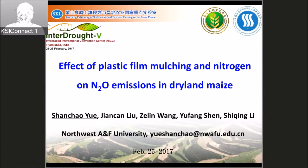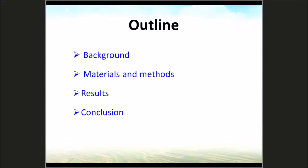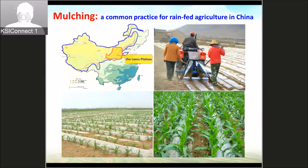This is included in four parts. In China, the arid area is about 17 percent and is mostly in the northwest. In recent years, plastic film mulching practice is becoming a common practice for farmers to increase yield in rain-fed agriculture. You can see the picture showing farmers using plastic film mulching.